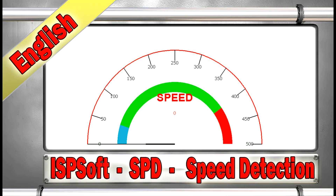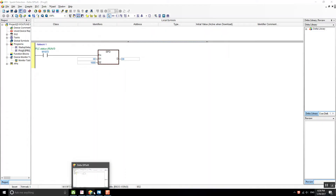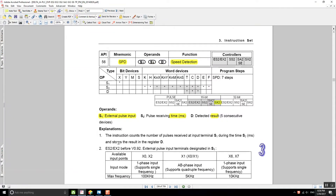In the following video I will be explaining how to use the speed detection instruction in ISPsoft. First of all, let's start by going to our manual, the PLC manual, and we're going to find the speed detection function.